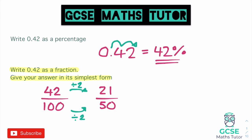Now we check again — do these divide by anything? 21 only divides by 3 or 7. 50 doesn't divide by 7, and it doesn't divide by 3 either. There's a little trick for dividing by 3: you add up the digits and see if they're in the 3 times table. 5 plus 0 equals 5, and 5 is not in the 3 times table, so it doesn't divide by 3. So 21 over 50 is our simplified fraction. Turning the decimal into a percentage we multiply by 100, divide by 100 going back, and to turn it into a fraction write it as a percentage then put it over 100 and simplify.